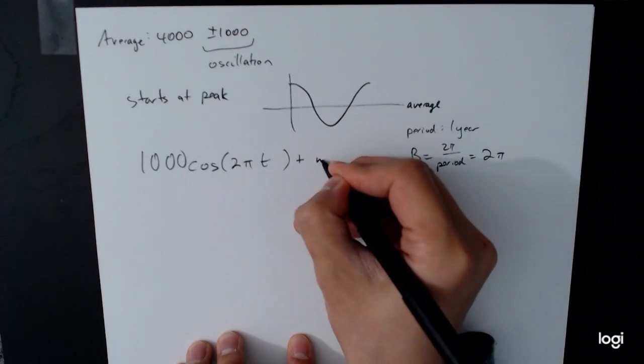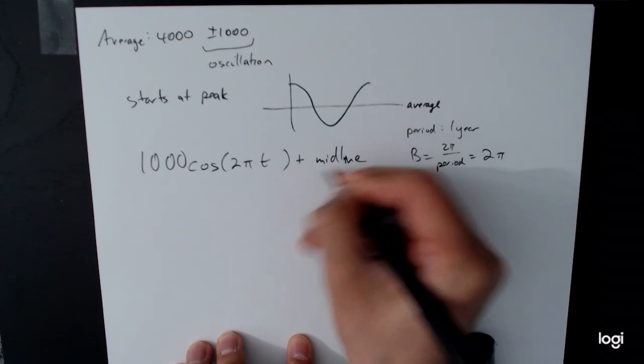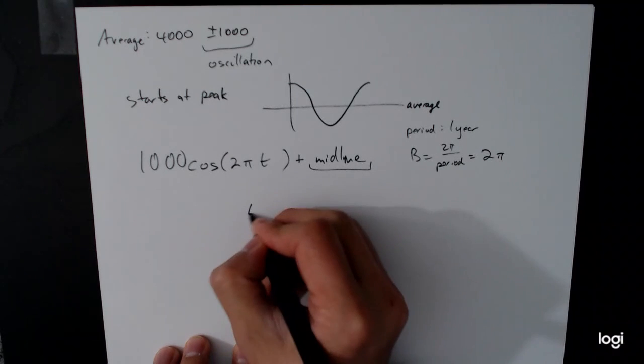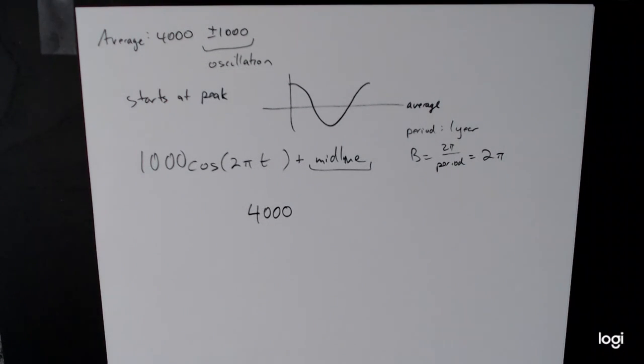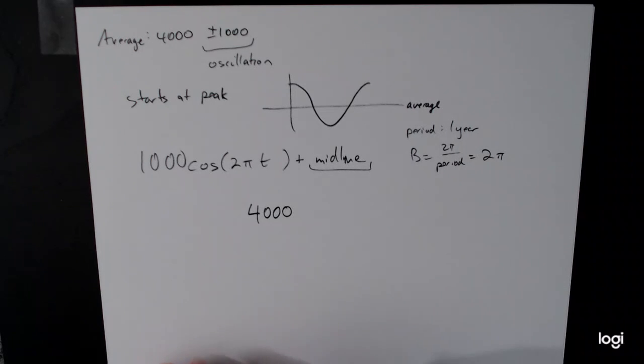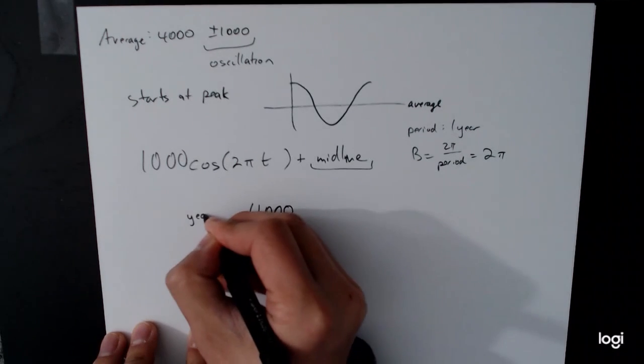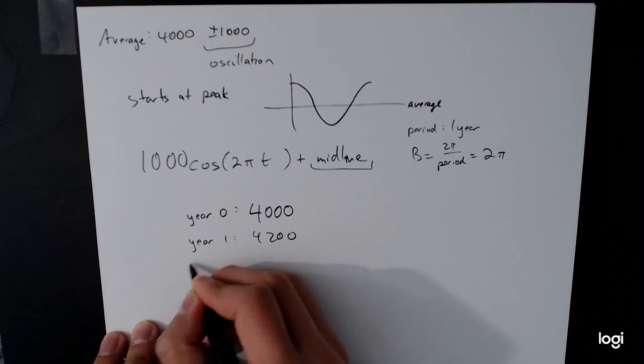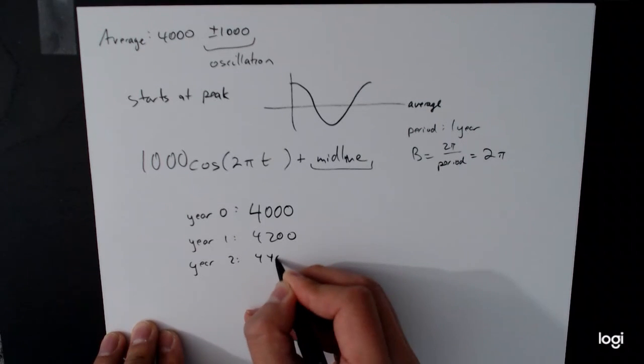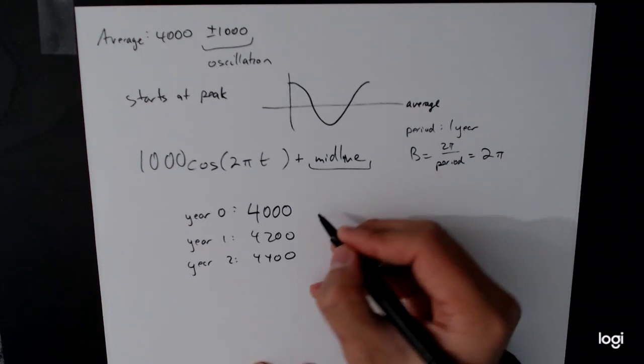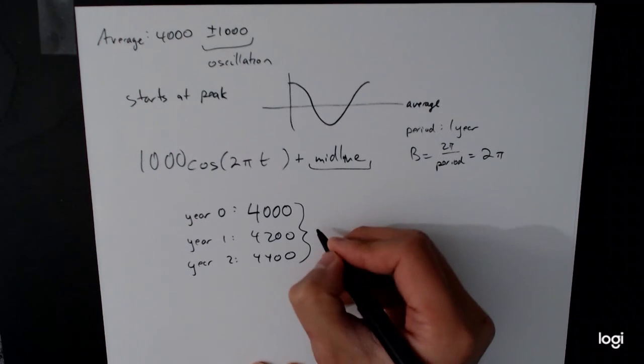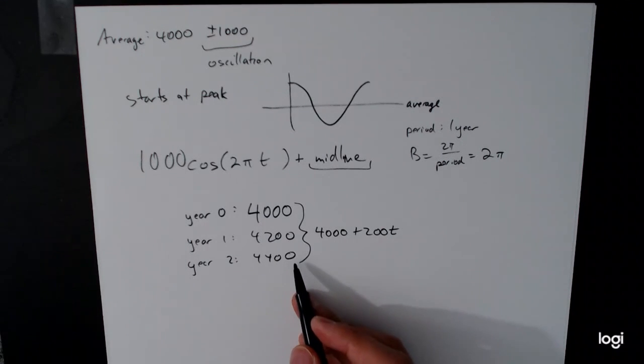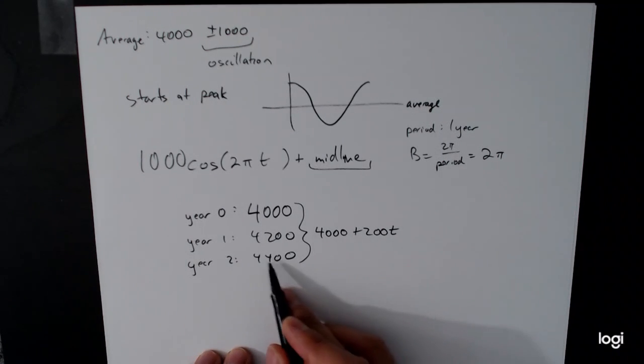Now the challenge for this one really is the midline part. How are we going to get the midline? We have to use the other information. We're starting at a 4000 person average, and then it's going to go up 200 people per year. So in the second year, this is year zero, so this is where we start off. After the first year, we're going to have 4200, and after the second year, 4400, and so on. We need to find some mathematical formula that captures this behavior. With a little bit of thinking, it's 4000 plus 200 times the number of years. After two years, it's gone up 200 twice. 200 twice is 400, so 4400.